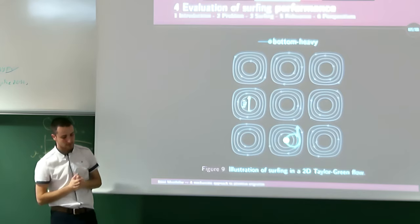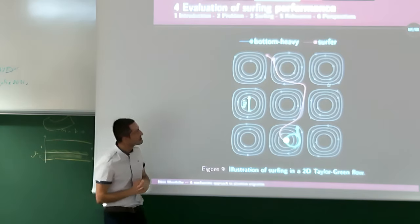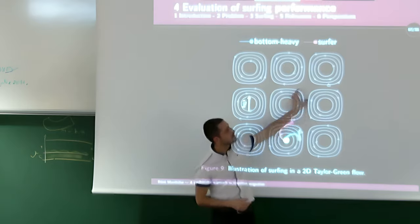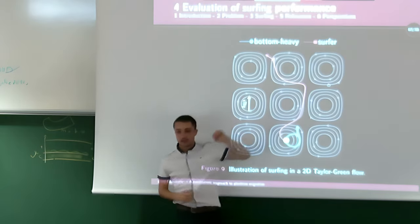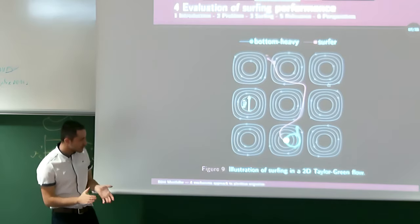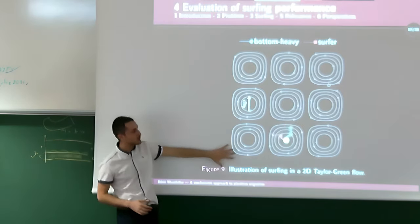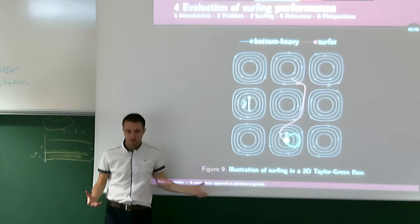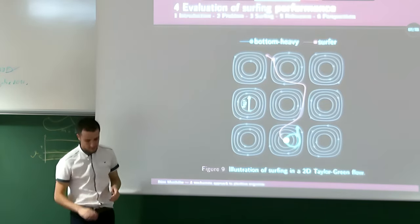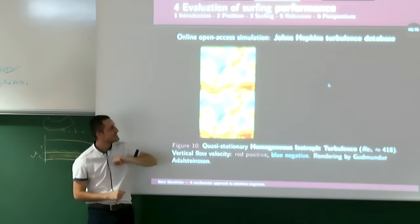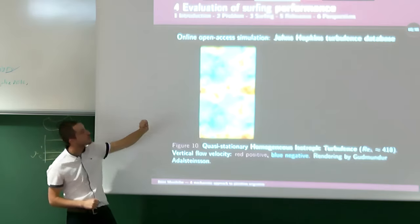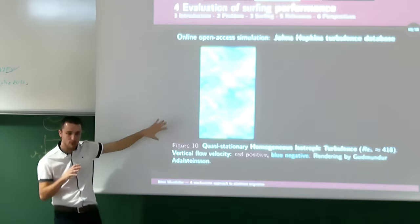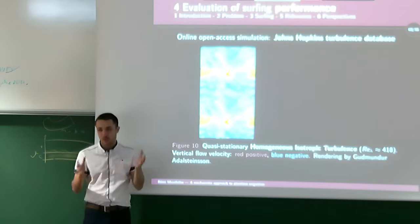The actual environment of planktonic organisms is turbulent, so we need to evaluate the strategy in turbulent flow. We use an open-access simulation from the Johns Hopkins Turbulence Databases. The red regions show upward flow velocity and blue regions show downward flow. If we can find these red patches, the flow carries us upward for more efficient migration. However, planktonic organisms access the local flow velocity gradient — the vorticity — rather than the flow velocity itself.